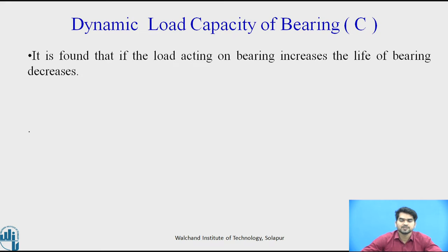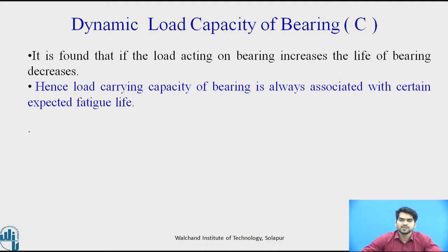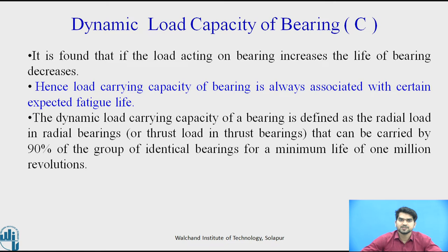Now we will see the dynamic load carrying capacity of the bearing. It is denoted by the letter capital C. In the previous session, we had seen the static load carrying capacity of the bearing, indicated by the letter C0. It is found that if the load acting on the bearing increases, the life of the bearing decreases. Hence, the load carrying capacity of the bearing is always associated with a certain expected fatigue life. The dynamic load carrying capacity is defined as the radial load in a radial bearing or the thrust load in a thrust bearing that can be carried by 90 percent of identical bearings for a minimum life of 1 million revolutions.